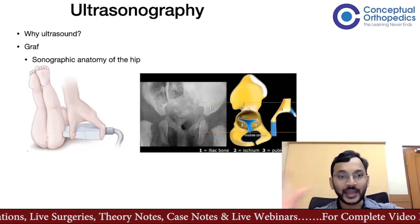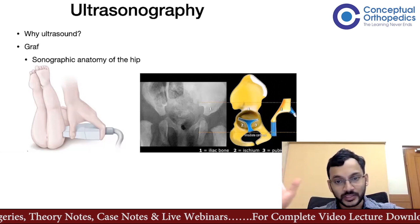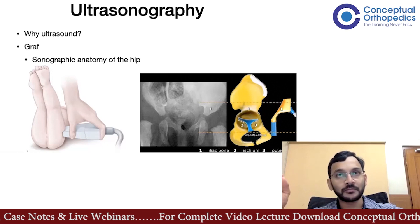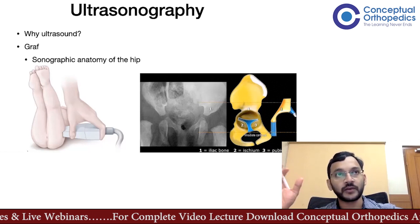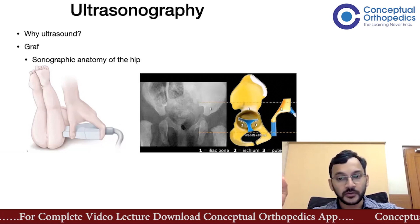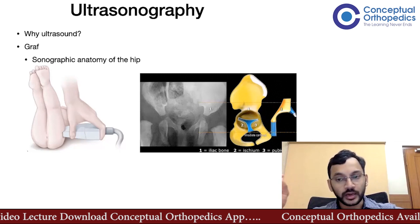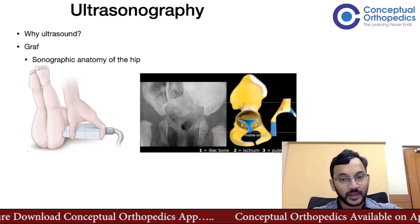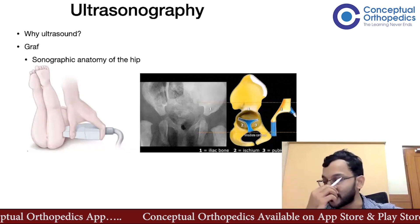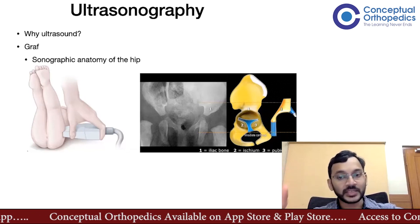Let's start with why ultrasound and why not an X-ray. Ultrasound gives us a very vivid experience of visualizing the cartilage within the hip joint, which is not possible through an X-ray. An MRI can do it, of course, but the problem with MRI is it's expensive, time-consuming, and you have to sedate the child. So ultrasound is the best of both worlds.